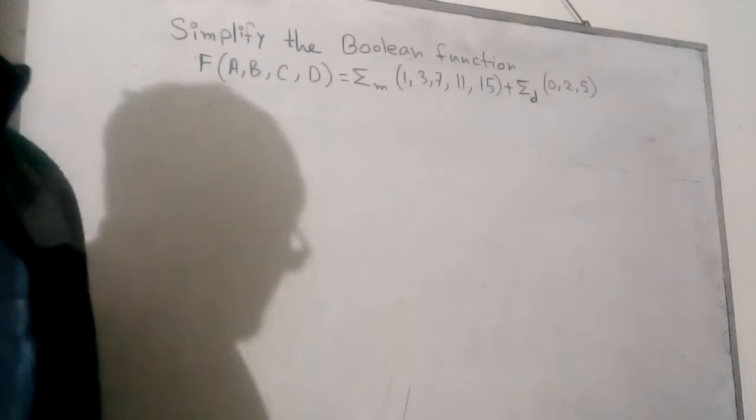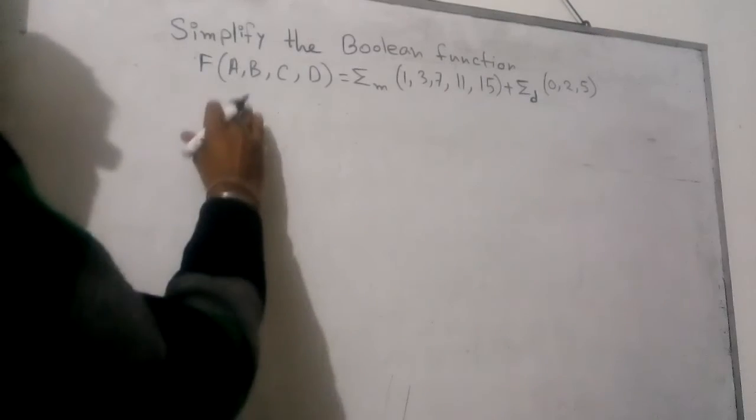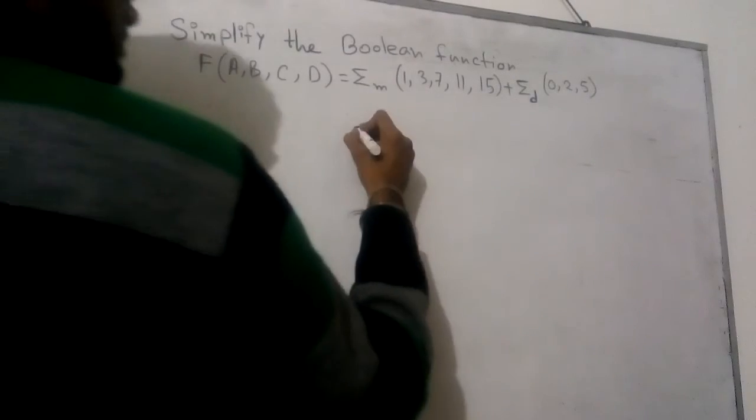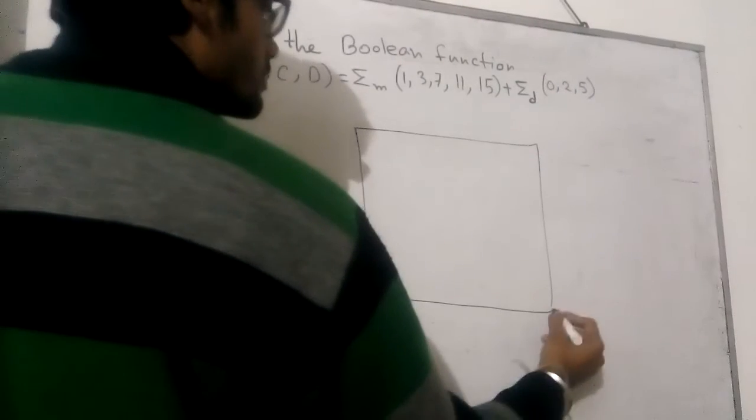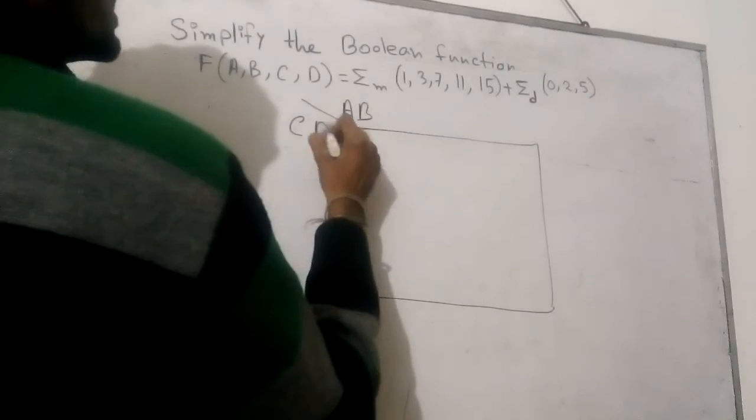We are going to create the K-map box with four variables: A, B, C, D.